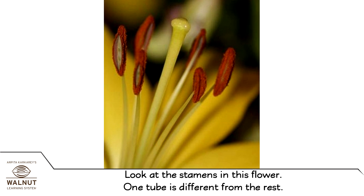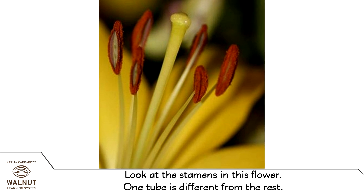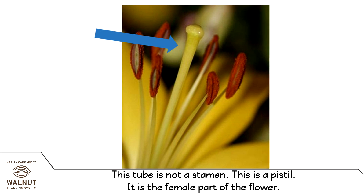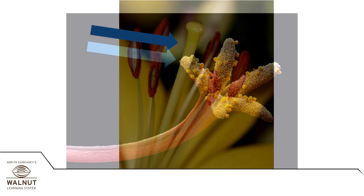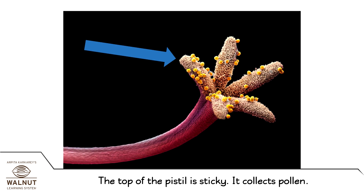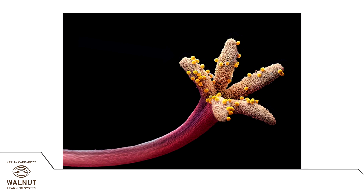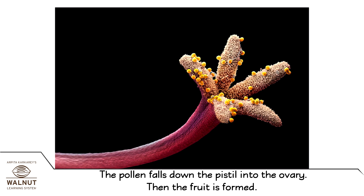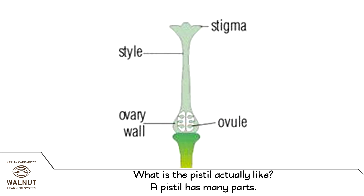Look at the stamens in this flower. One tube is different from the rest — this tube is not a stamen, this is a pistil. It is the female part of the flower. The top of the pistil is sticky and it collects pollen. The pollen falls down the pistil into the ovary, then the fruit is formed. A pistil has many parts.